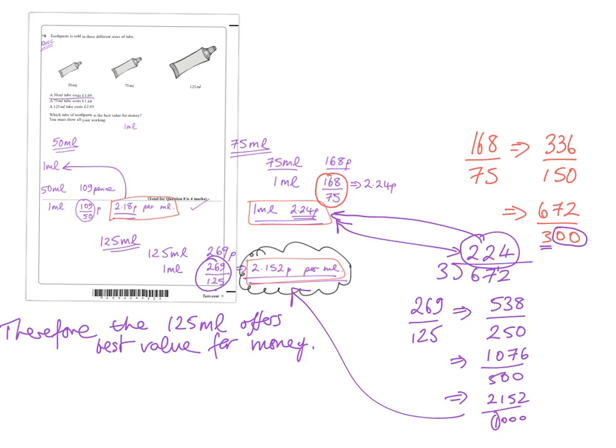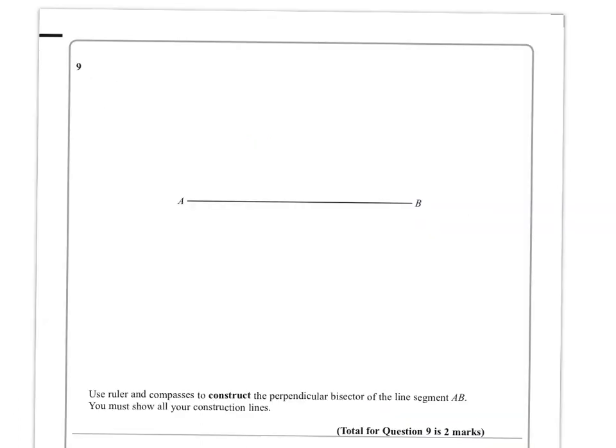Right, so let's move on to the next question. So question 9. Use a ruler and compasses, which I don't have, but you will, to construct the perpendicular bisector of the line segment AB. And you must show all your construction lines. Well, if we want to bisect something, we want to cut it in half.